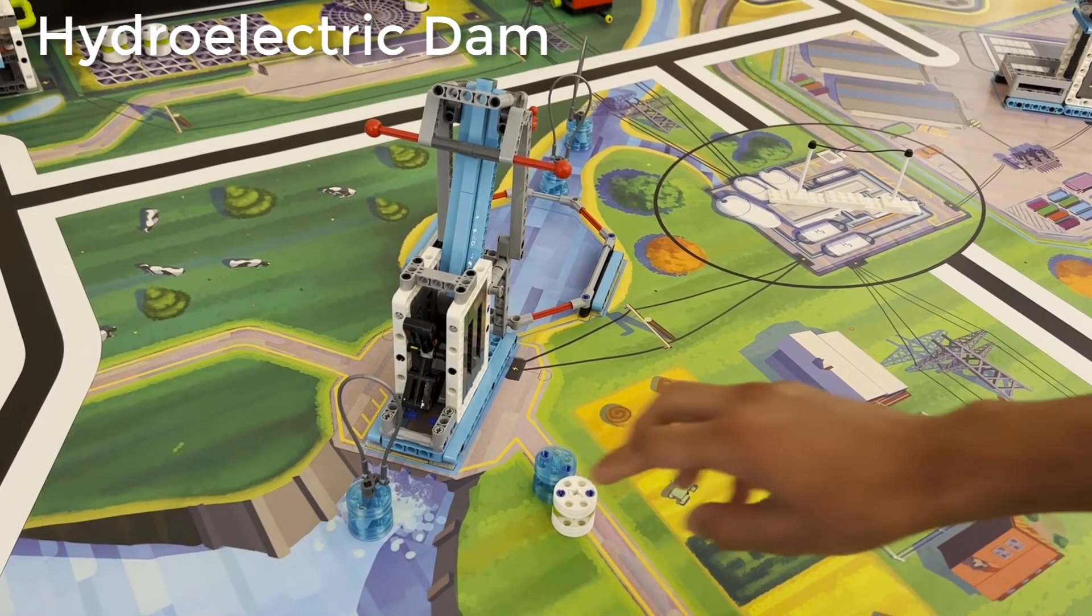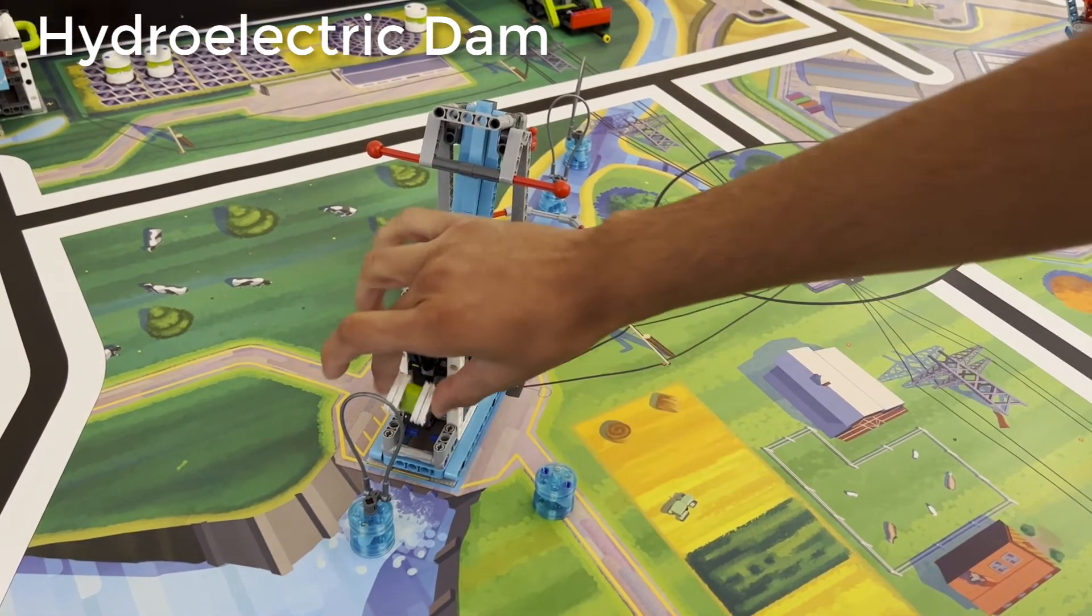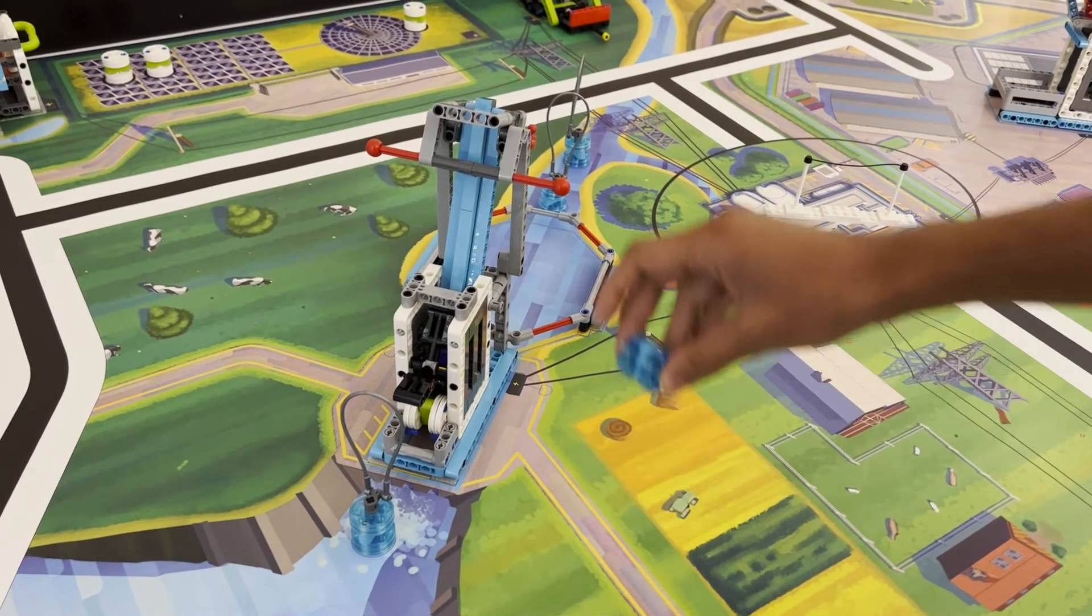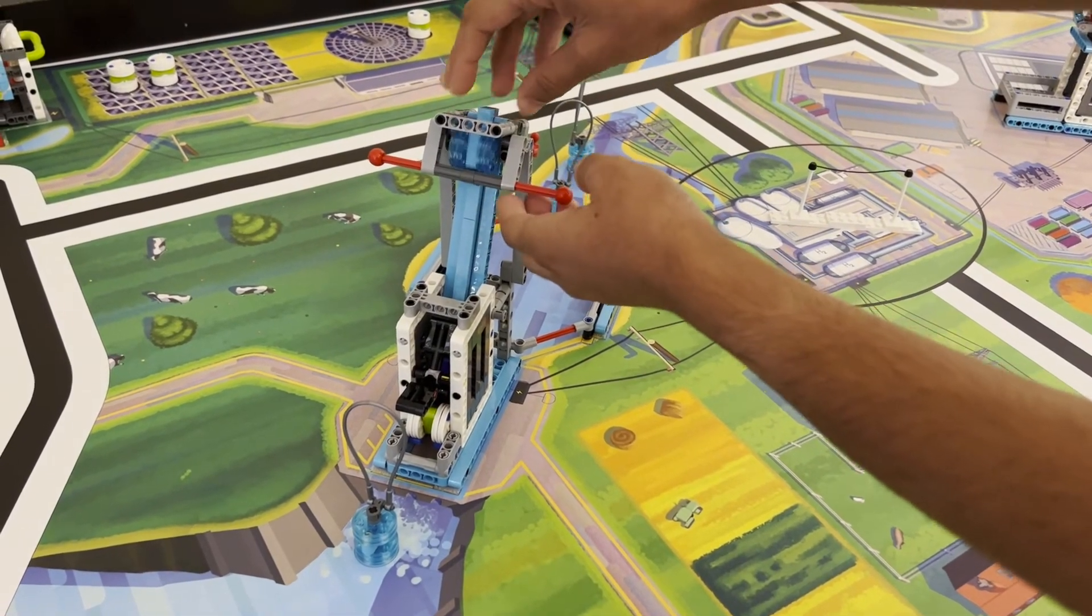Load an energy unit at the bottom of the hydroelectric dam and load one water unit at the top. Lift the axle up to make the water roll down and eject the energy unit.